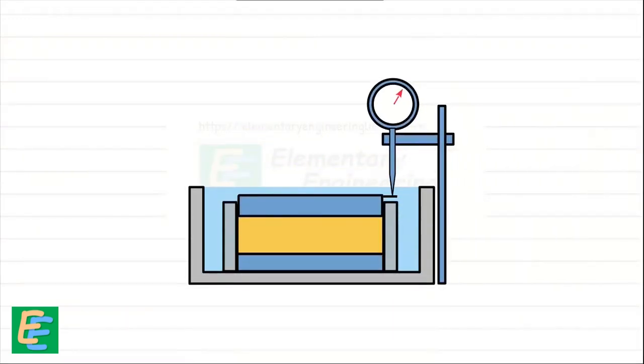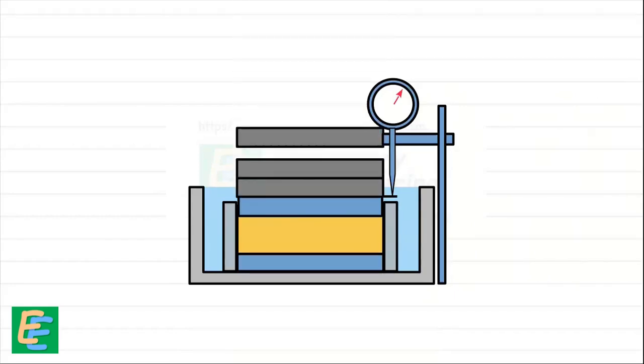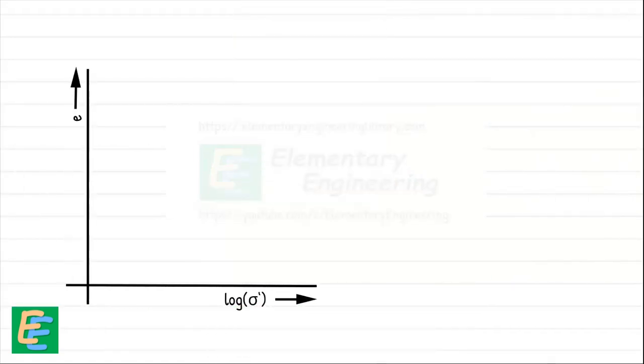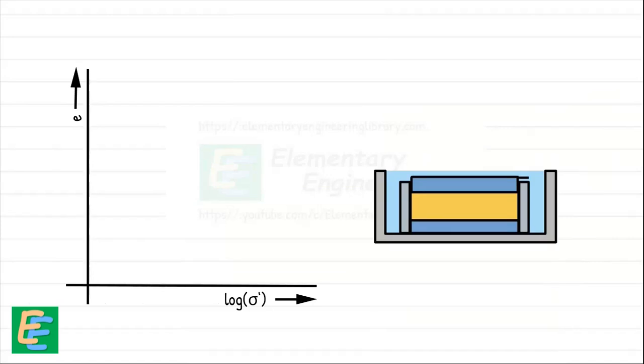In the consolidometer test, we loaded a soil sample in steps and then unloaded it in the same way. We plotted the curve between void ratio and effective stress on log scale. For our soil sample that has never been subjected to any compressive loads in its history, we obtained a straight line by loading it for the first time.